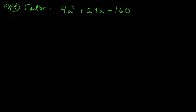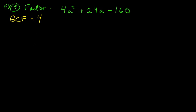What are we forgetting? The GCF! It's not 1 this time — all three terms are divisible by 4. So the GCF is 4. Factor that out first: 4(a² + 6a − 40). Now the leading coefficient is 1, and we can use our usual technique.